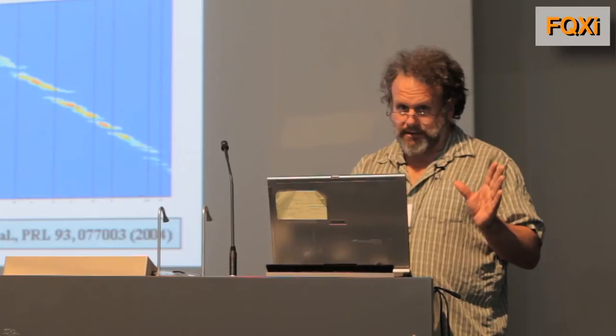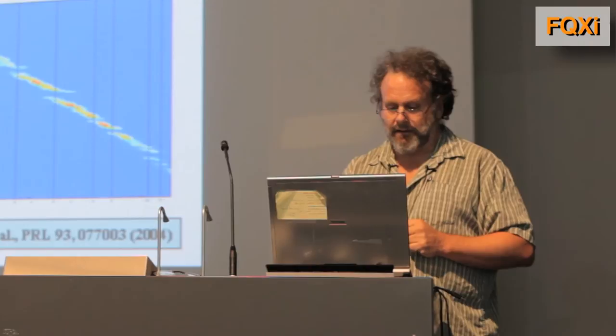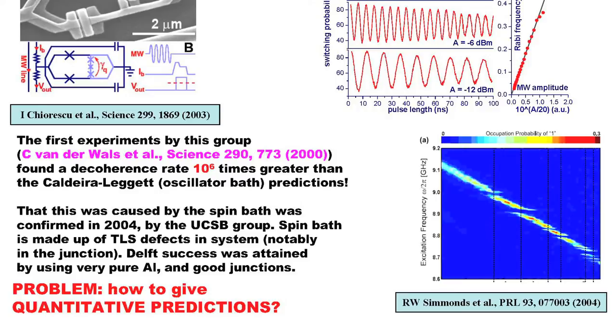They first saw coherence between two macroscopically different states in which current was circulating oppositely in a superconducting SQUID. The decoherence rate measured in this experiment was a million times larger than it should have been according to the Caldera-Leggett theory. And the reason for that was that almost all of it was being caused by spin-bath states — defects in the system, two-level systems. So it's very hard to predict decoherence for a system like this.